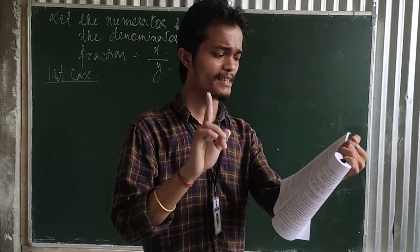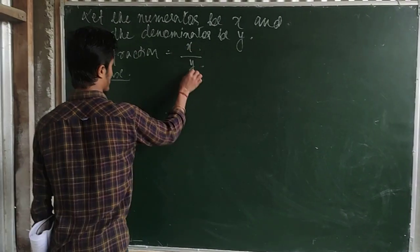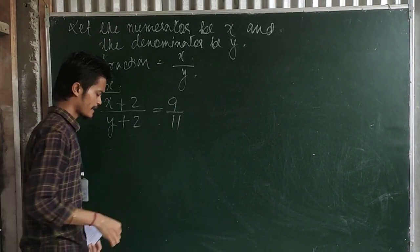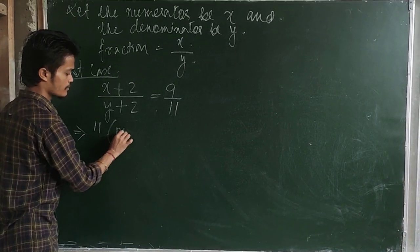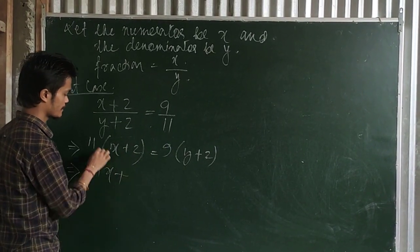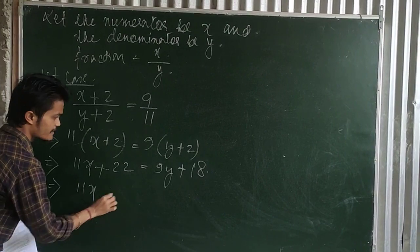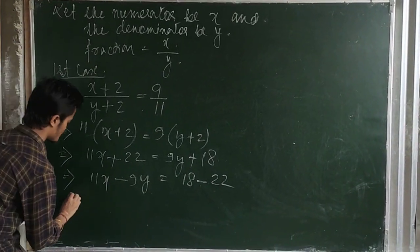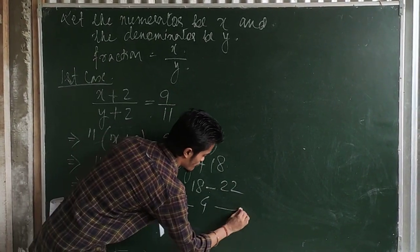First case: the fraction becomes 9 by 11 if 2 is added to both the numerator and denominator. The fraction is x by y, and adding 2 to both gives (x plus 2) by (y plus 2) equals 9 by 11. Cross multiplying: 11 into (x plus 2) equals 9 into (y plus 2), which gives 11x plus 22 equals 9y plus 18, so 11x minus 9y equals 18 minus 22, giving 11x minus 9y equals minus 4. That is equation 1.